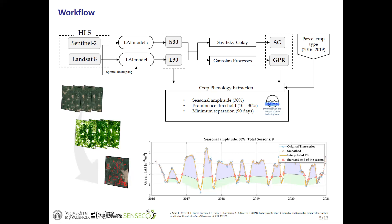The four Green-LAI time series were used to extract phenology metrics per crop type at the parcel level, using the seasonal amplitude method. Before estimating the phenological metrics, each crop season must first be detected. For that, we set two different thresholds: a prominence threshold evaluating whether the season peak is sufficiently high, and a minimum separation as the number of days between two consecutive season peaks. These values were set as optimal values to detect as many seasons as possible.